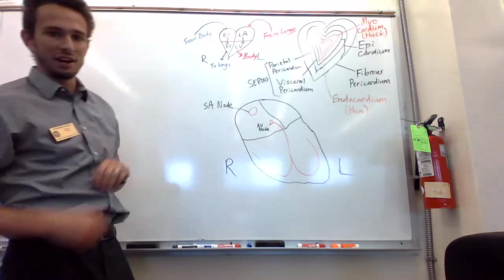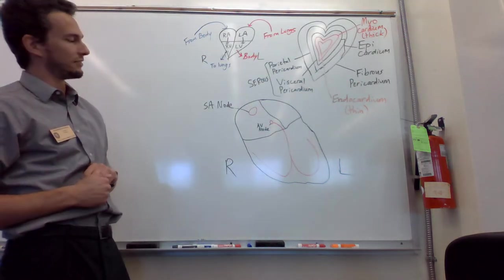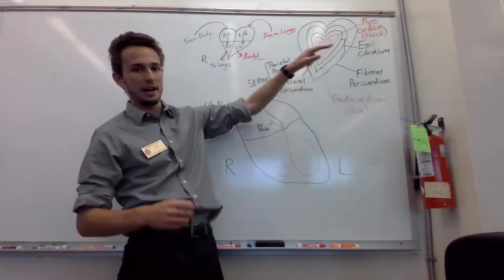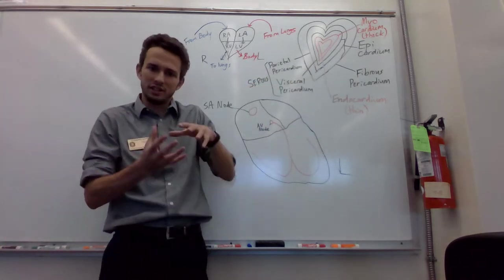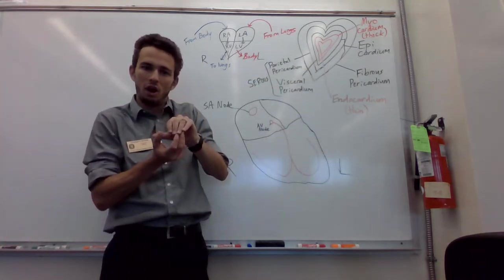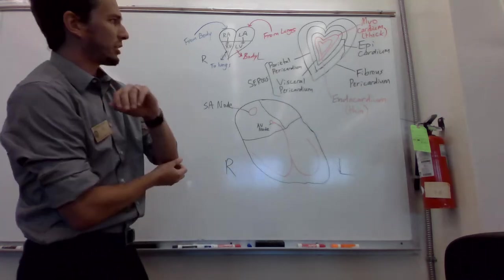The endocardium is very thin, and it's basically the inner side of the heart. So the endocardium is on the inside. It's basically touching the hollow opening of the heart where the blood will be.